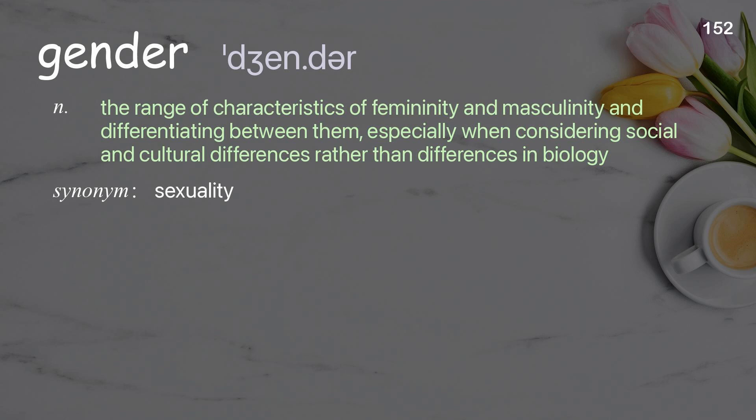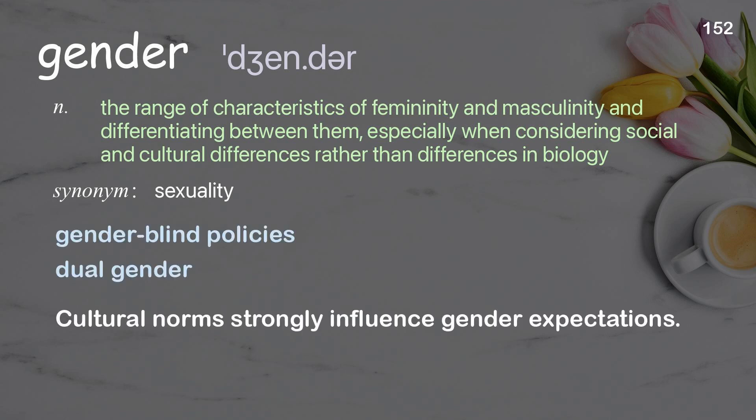Gender: the range of characteristics of femininity and masculinity and differentiating between them, especially when considering social and cultural differences rather than differences in biology. Examples: gender-blind policies, dual gender. Cultural norms strongly influence gender expectations.